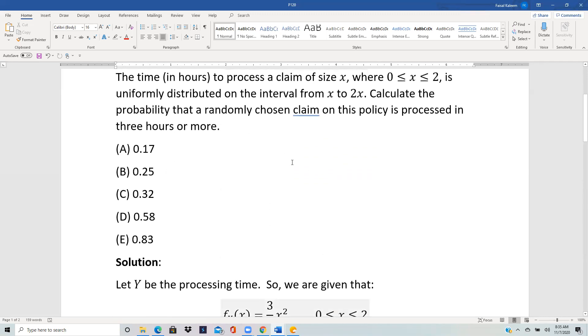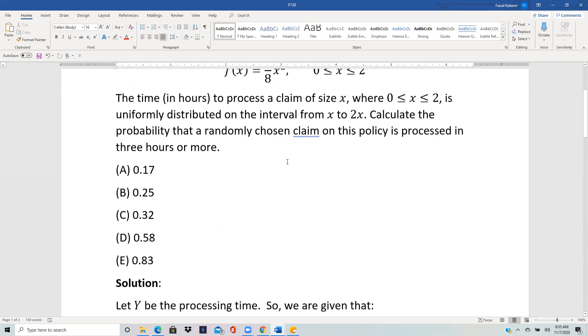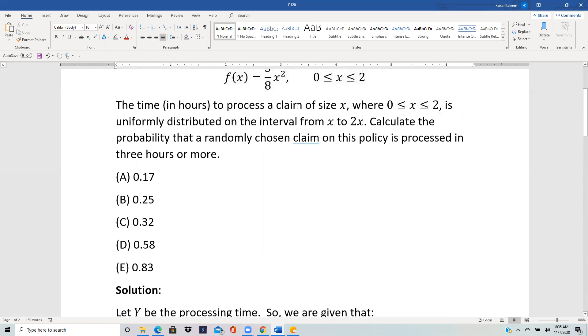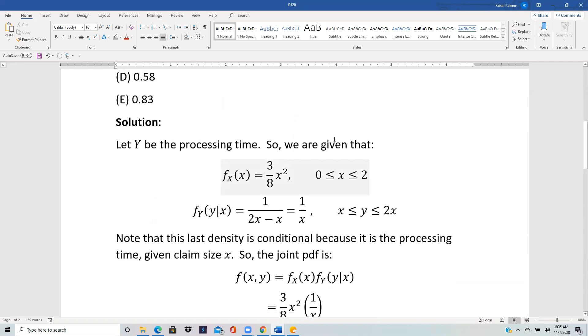So f_X(x) is given to be 3x squared by 8 from x 0 to 2, and we are calling the processing time as Y. We are told that given a claim of size x, although the word given is not here but you can see it implied, to process a claim of size x, which means given that the claim is of size x, the Y is uniformly distributed from x to 2x. So it means we are given the conditional density of Y given x, so it's uniform from x to 2x, so it'd be 1 over 2x minus x from x to 2x.